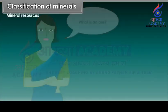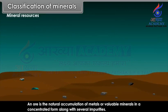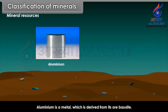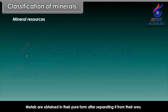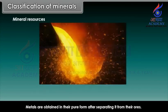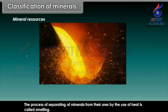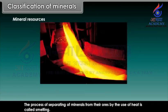What is an ore? An ore is the natural accumulation of metals or valuable minerals in a concentrated form along with several impurities. For example, aluminium is a metal which is derived from its ore, bauxite. Metals are obtained in their pure form after separating them from their ores. The process of separating minerals from their ores by the use of heat is called smelting.